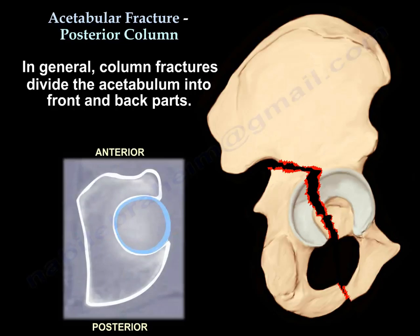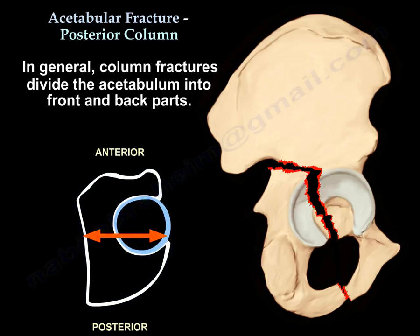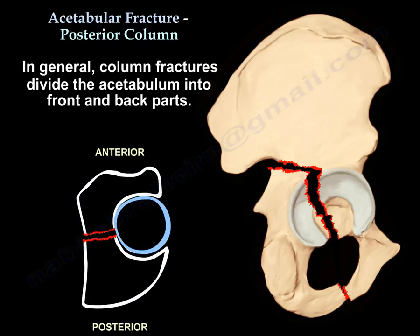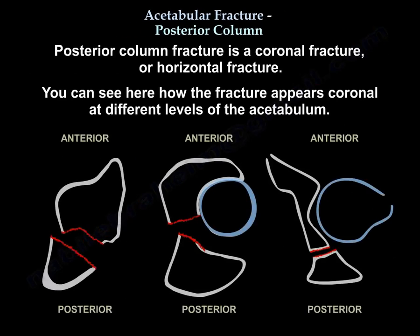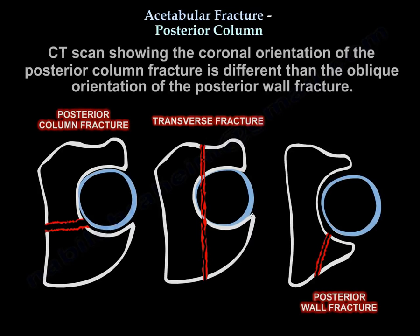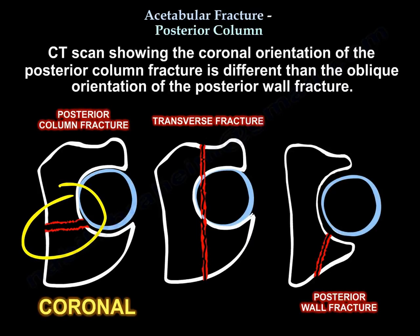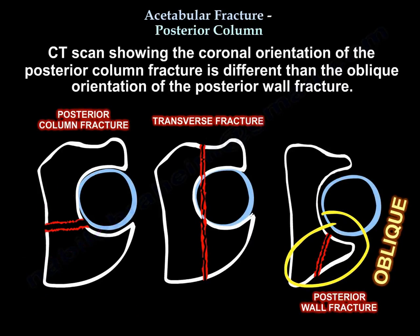Column fractures divide the acetabulum into front and back parts. It is a coronal or horizontal fracture, and you can see how the fractures appear coronal at different levels of the acetabulum. The CT scan shows the coronal orientation of the posterior column fracture, which is different than the oblique orientation of the posterior wall fracture.